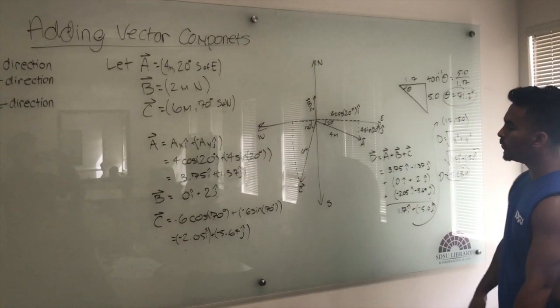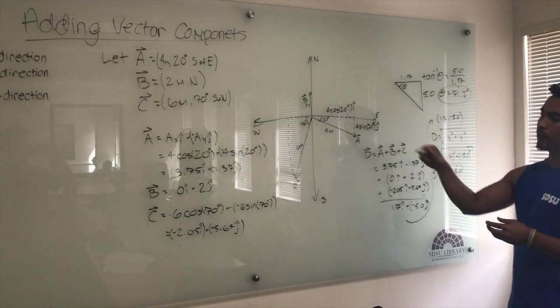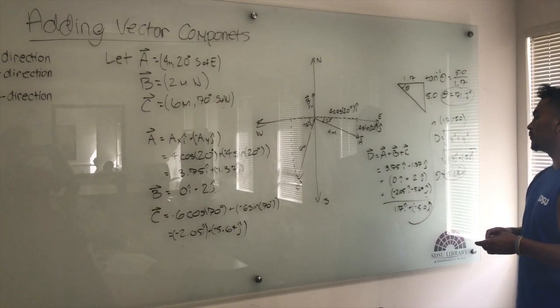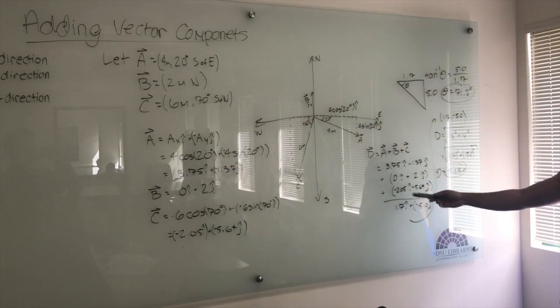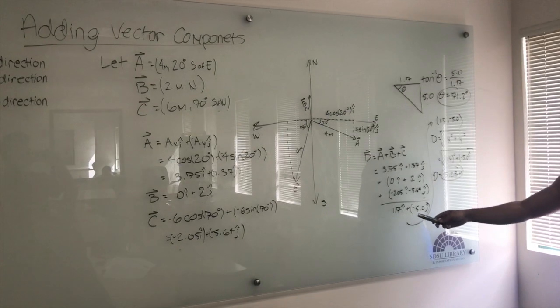So once you do that, you have the components of vector a. If you do that for each one, vector b, vector c as well. Once you get that, you add up all their x and y components together to get the final d components, which is down there. So it's 1.7 i-hat plus negative 5.0 j-hat.